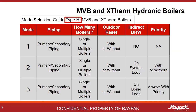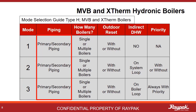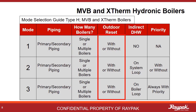This is a summary table for the hydronic type boilers. There are three modes to choose from: Mode 1, 2, and 3. All must be plumbed primary and secondary, as the MVB and X-Therm boilers are low mass. All three modes can be applied to single or multiple boilers, and all can run with or without outdoor reset. The difference lies in the presence or absence of an indirect hot water system. If there is no indirect system present, then it is a Mode 1 — this is the most common configuration.